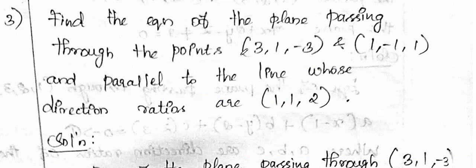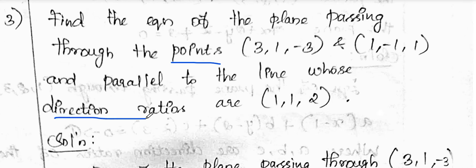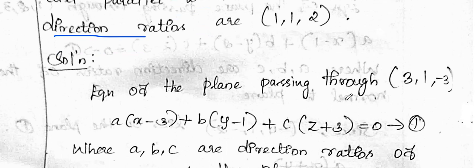Find the equation of the plane passing through two given points and parallel to the line whose direction ratios are (1, 1, 2). We substitute the points into the equation and use the direction ratios. The general equation is a(x - x1) + b(y - y1) + c(z - z1) = 0. This is equation 1.